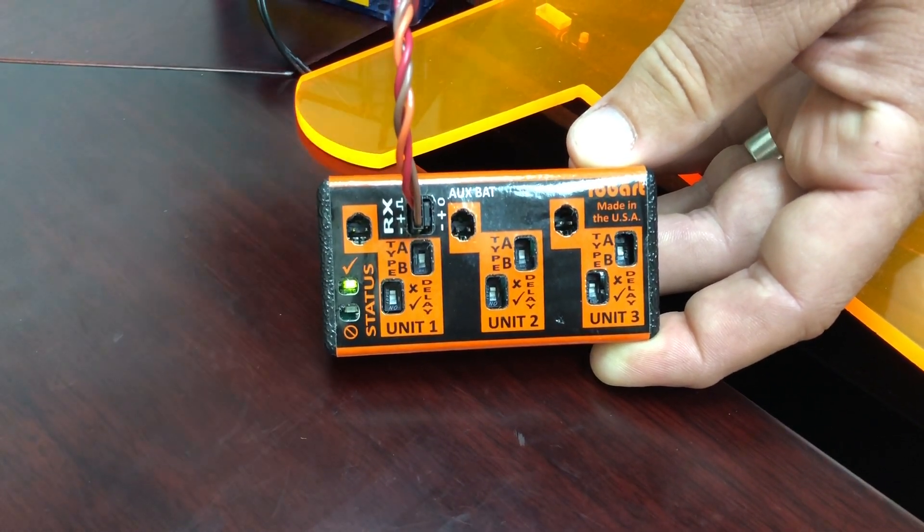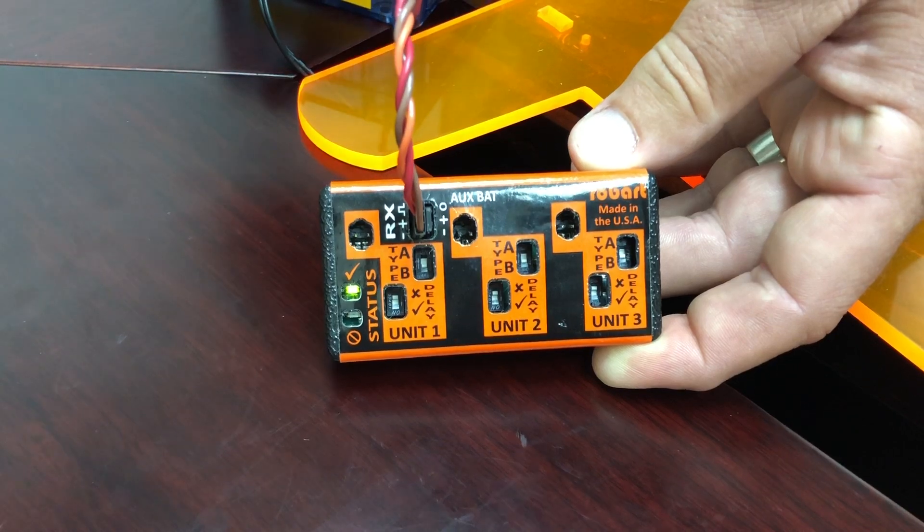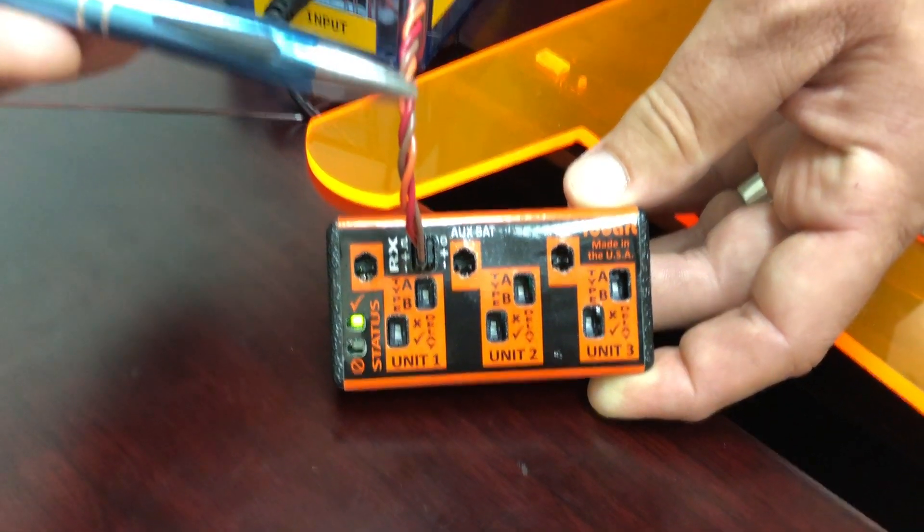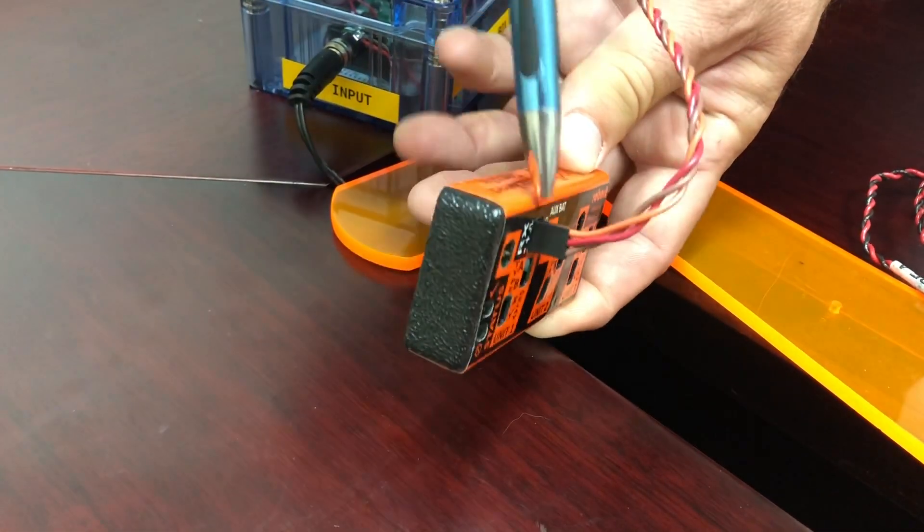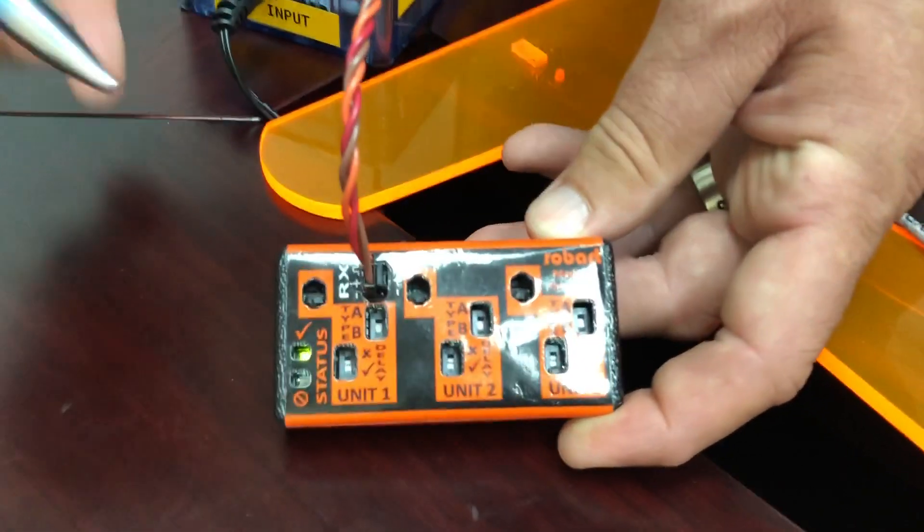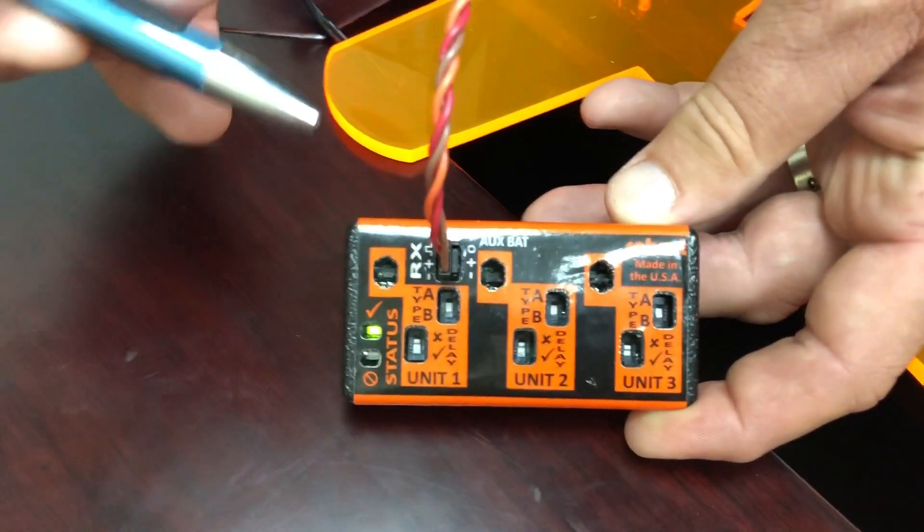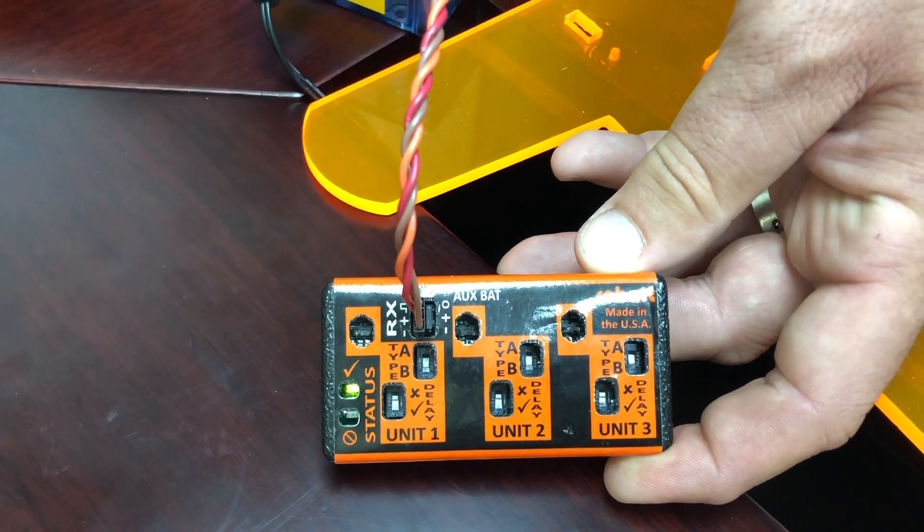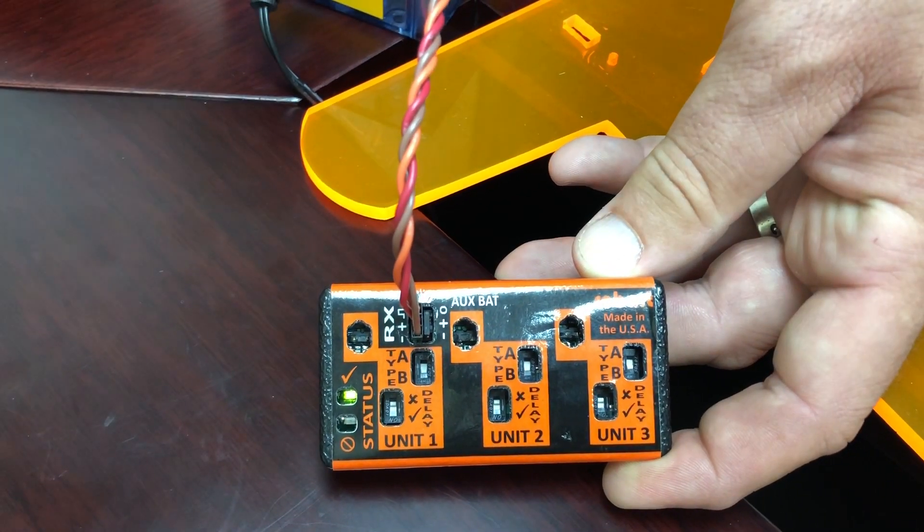So we're going to start off with the receiver wire, and you can see there are three colors here: orange, red, and brown. The brown wire goes to the negative, and that is basically all you need to plug in your receiver. Just think brown goes to negative.